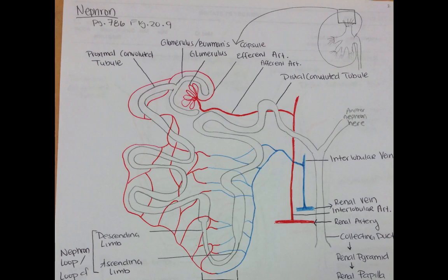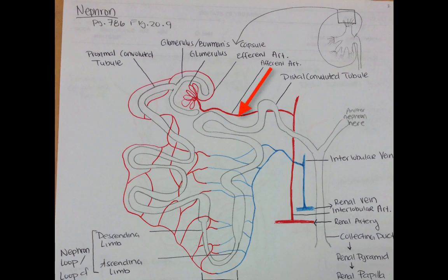We're going to draw the blood flow. I'm going to switch over to red to represent oxygenated blood. I'm going to draw the renal artery — technically it goes renal artery, interlobar artery, arcuate artery, interlobular artery, but we don't have time for all that. So here's the renal artery, and it will branch and form all those other arteries. Here's your interlobular artery, which will supply both nephrons. This now would be our afferent arteriole, and the afferent arteriole enters into the glomerular capsule and forms a glomerulus, which is a big knotted tangle of a blood vessel.